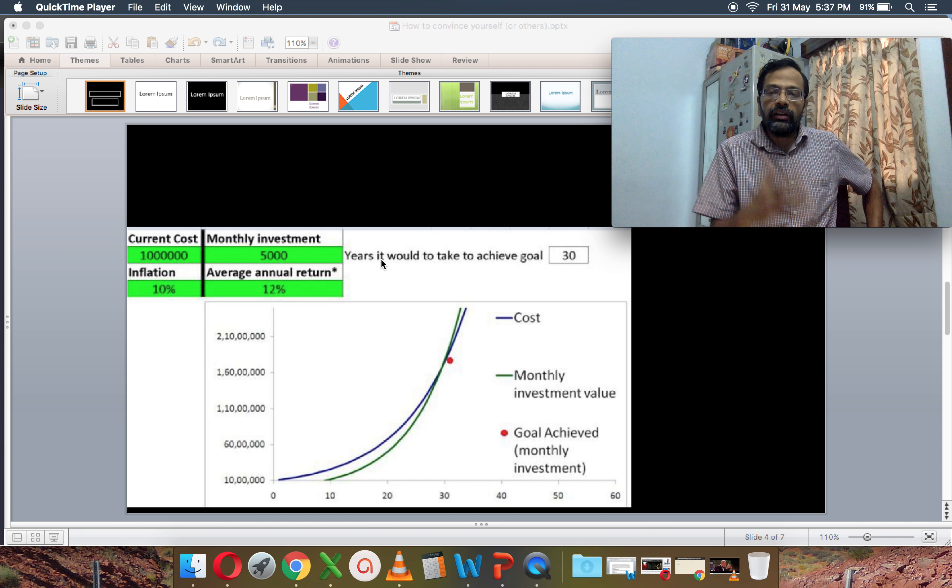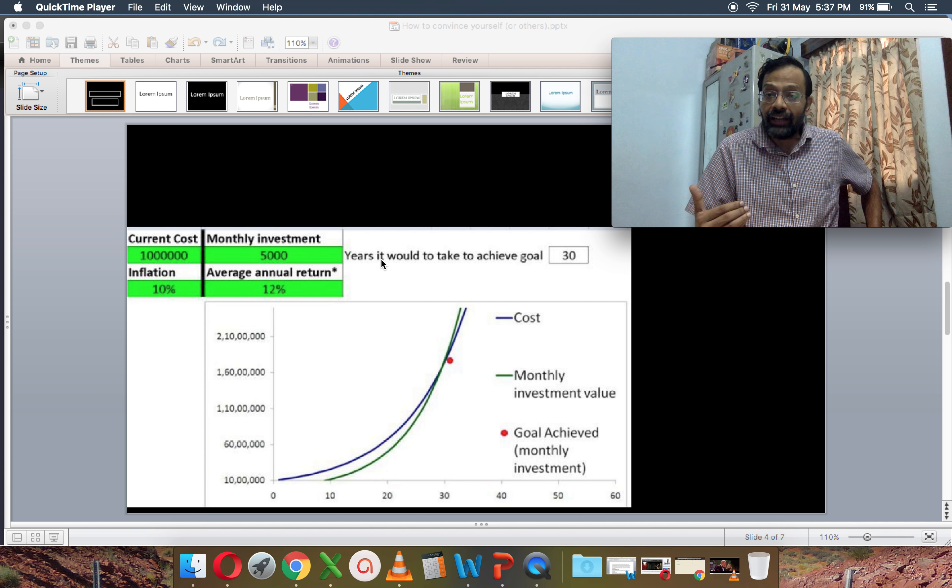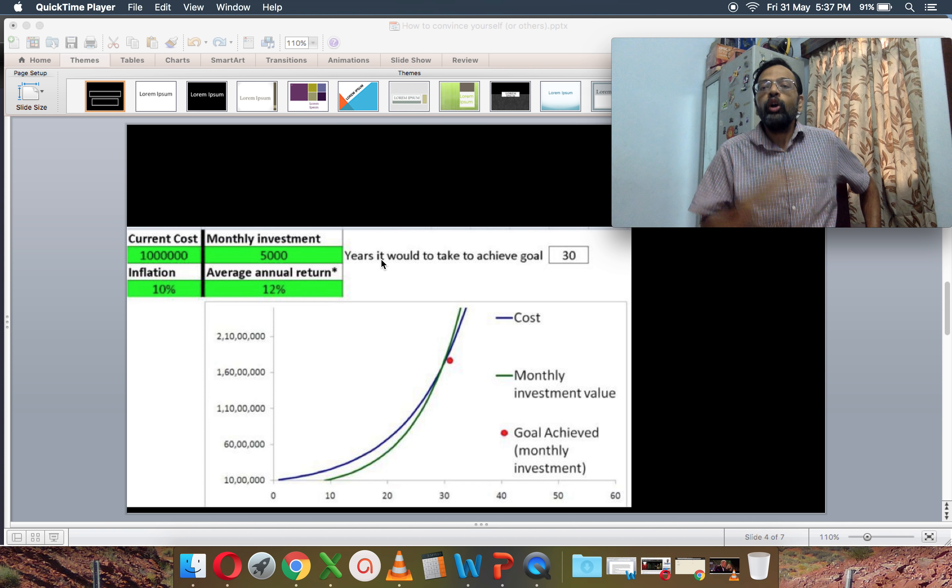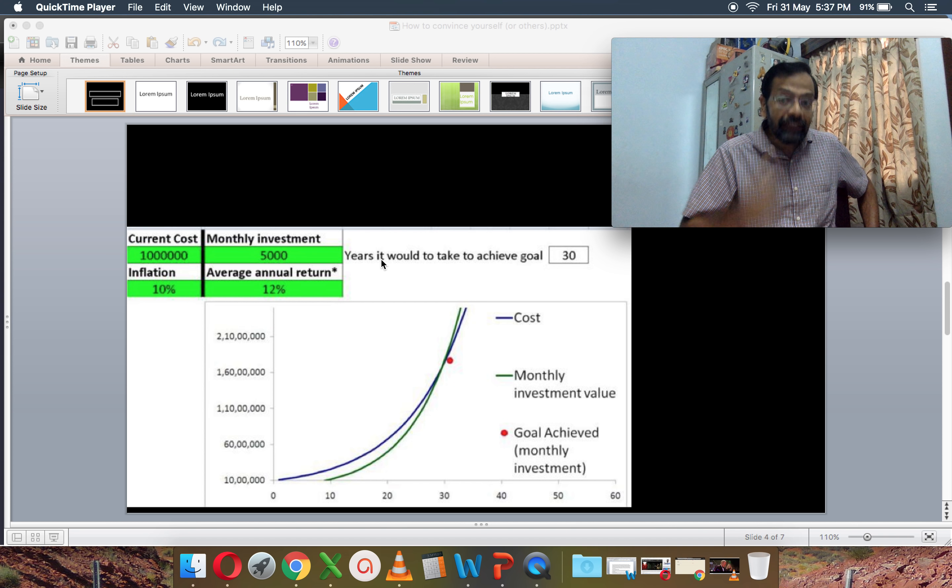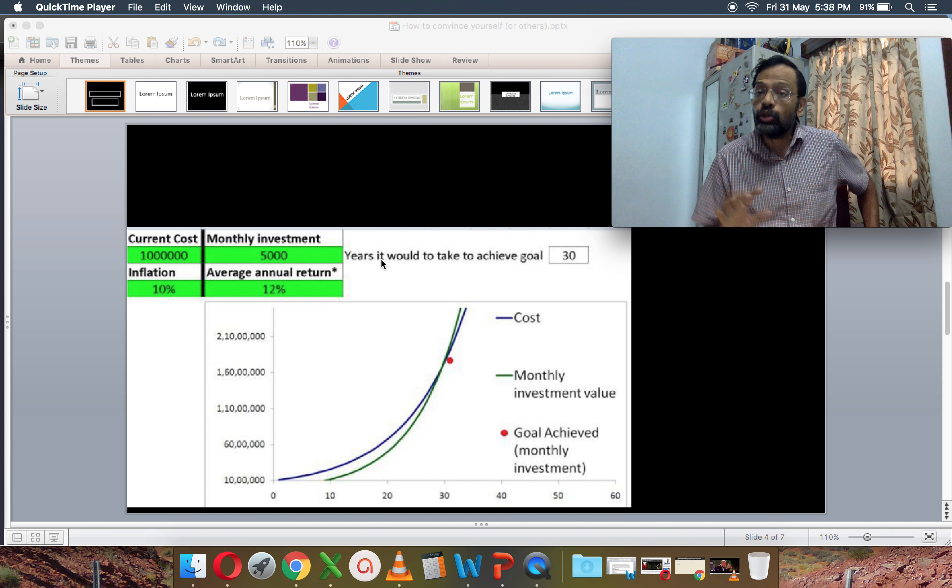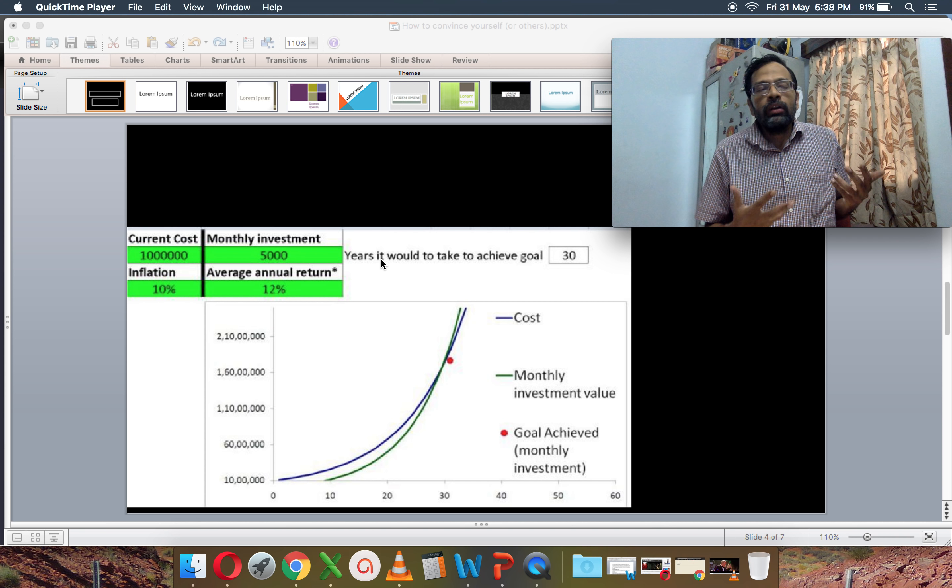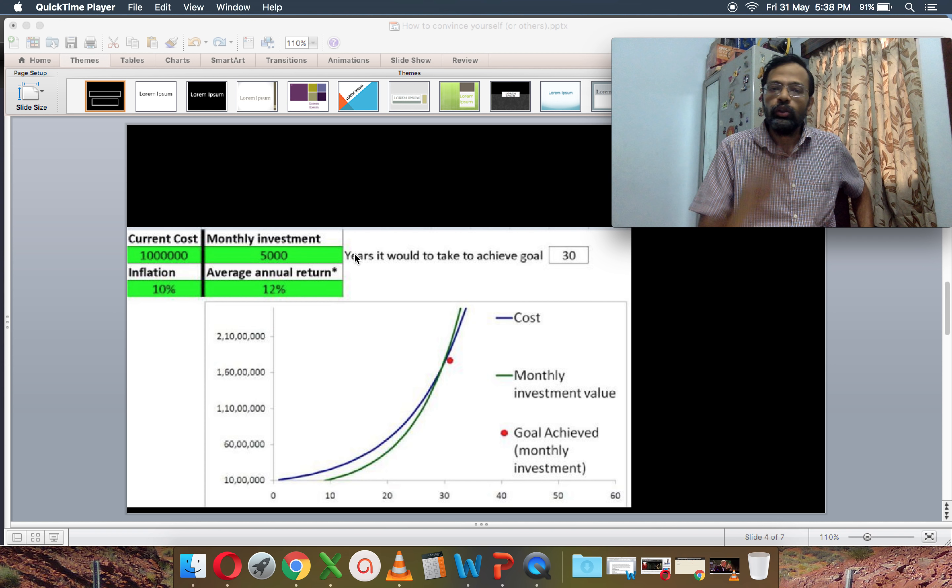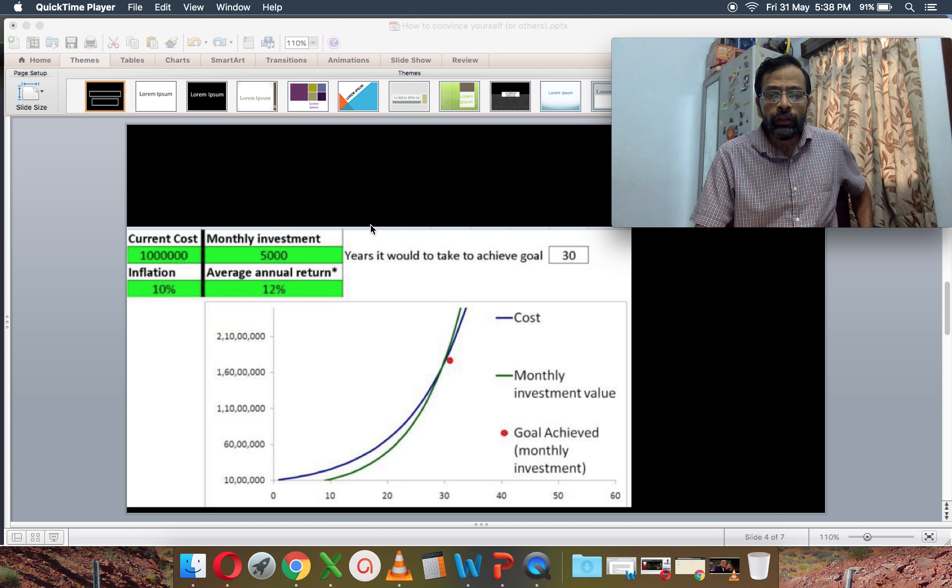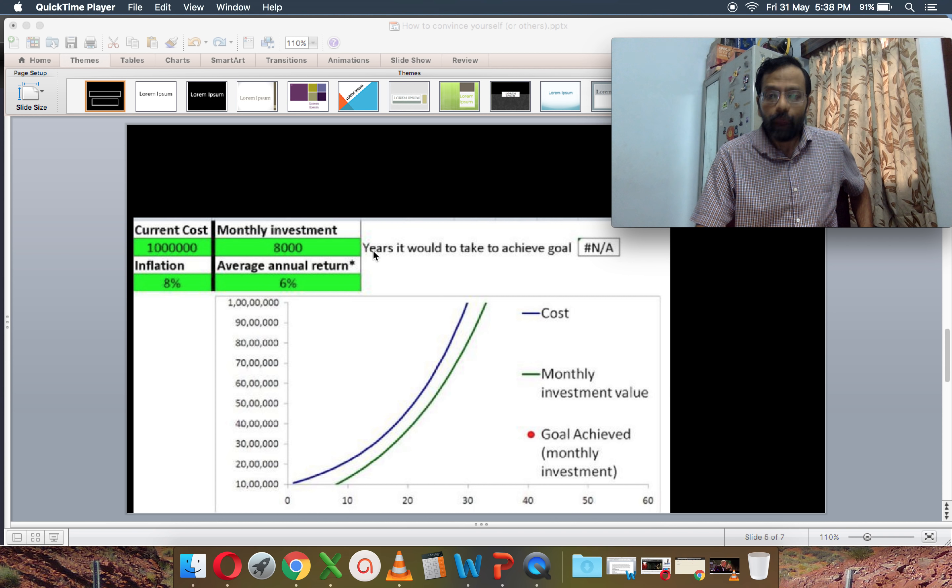So even though there is a positive real return, the real return is positive here, the return is higher than the inflation, the goal is not achieved in 19 years because the investment amount is less. So don't simply say I want to beat inflation, you must beat inflation in two ways. One, by trying to beat inflation in terms of returns, but also making sure you invest enough. If you are not investing enough, your goals will not be achieved, even though you beat inflation. So it's like operation successful, patient died, that kind of scenario. So be very, very careful about that, you have to invest enough.